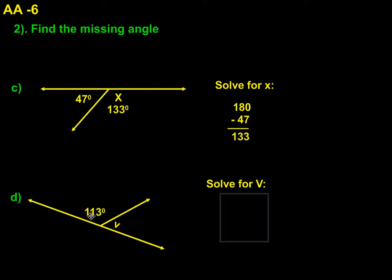Once again, supplementary. I'm given 113. If I take that amount and subtract it from 180, I get 67. And that tells me that the missing value of V is 67 degrees.